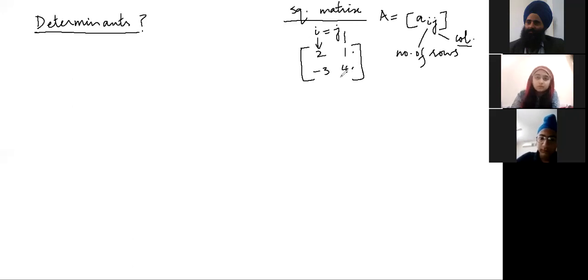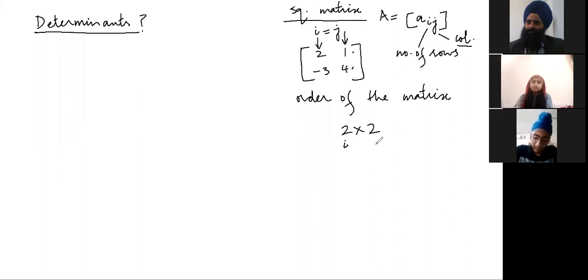It has how many columns? 2. So this is known as order of the matrix. What is the order of the matrix? It is 2 into 2 means 2 are the rows and 2 are the columns.